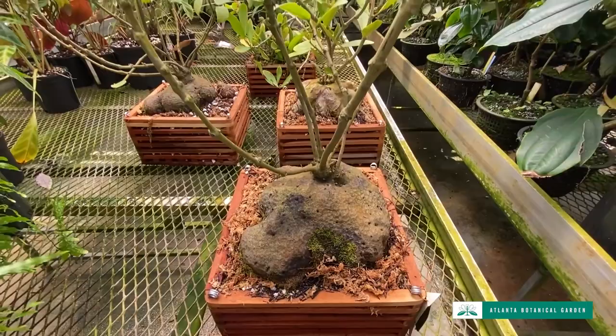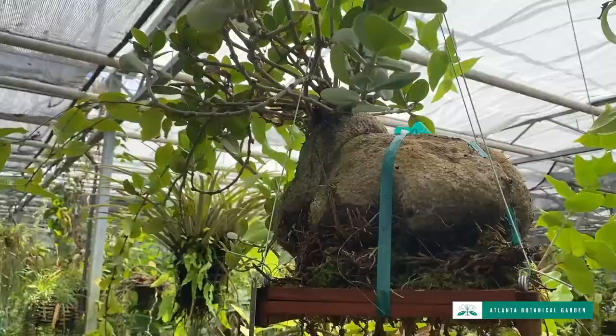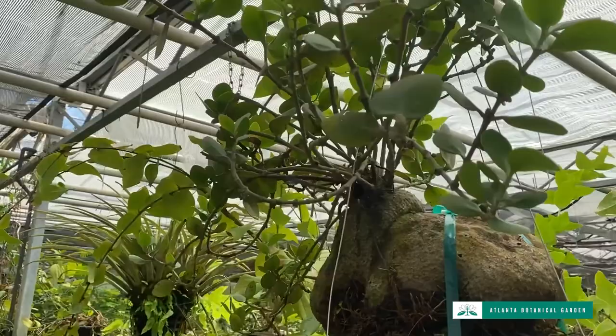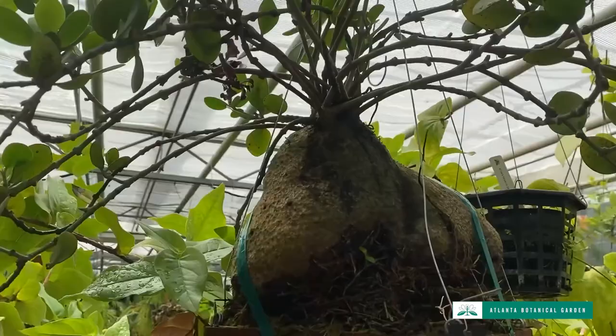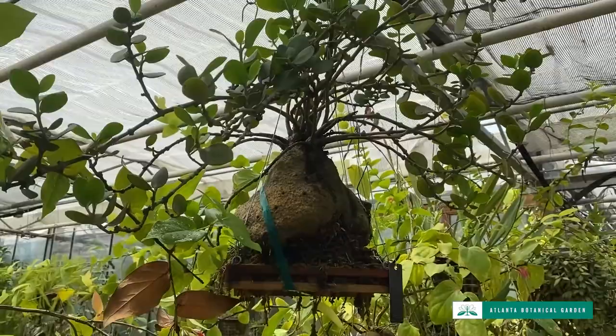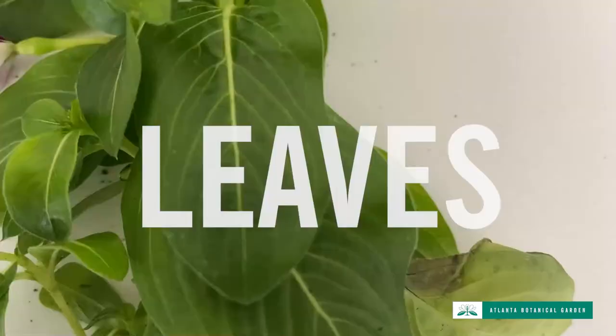The ant plant's main stem, called a caudex, is swollen and has many holes and channels on the inside. In the wild, ants will live in the stem, providing defense, pollination, and even nutrients for the plant in exchange for food and shelter.